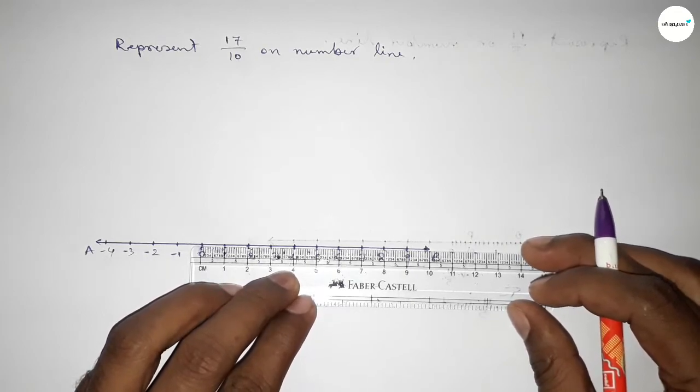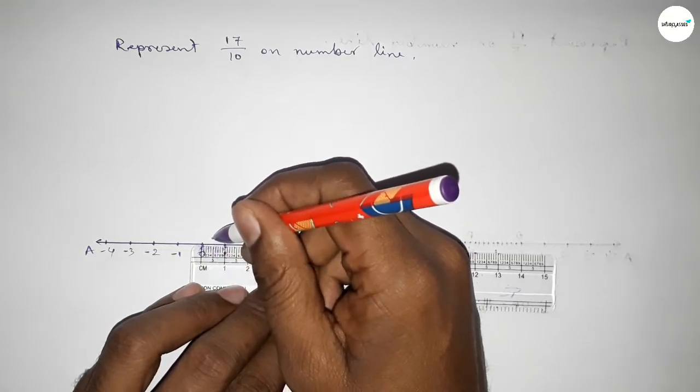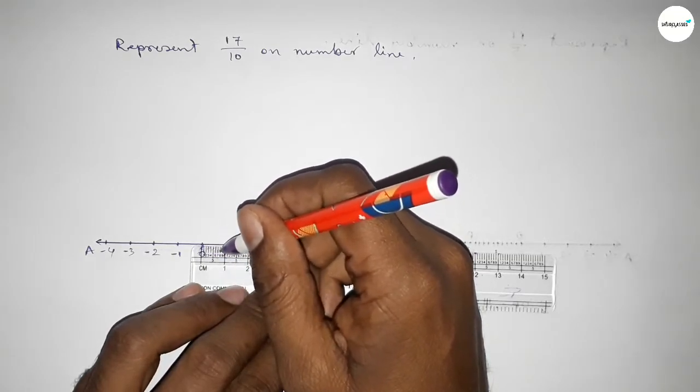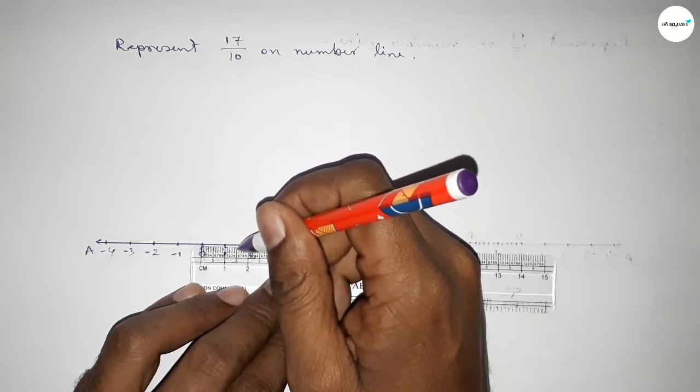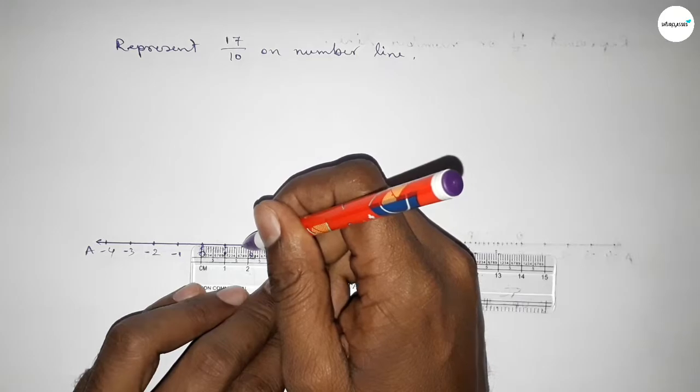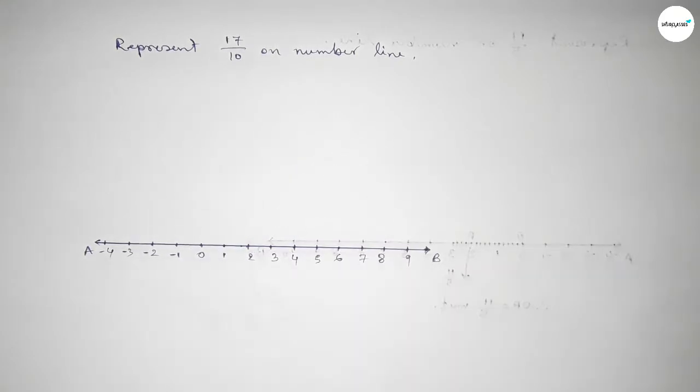First, dividing the distance between 0 to 1. Counting: 0.1, 0.2... then 1, 1.1, 1.2, 1.3, 1.4, 1.5, 1.6, 1.7. So this is 1.7, or 17/10.